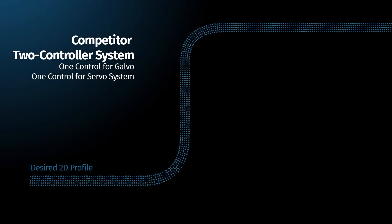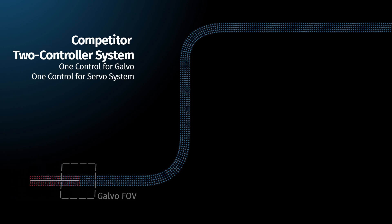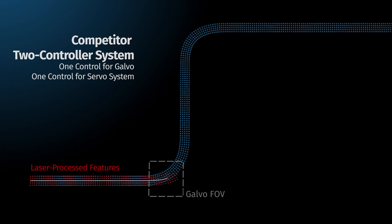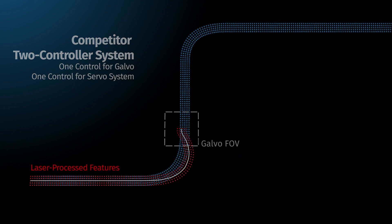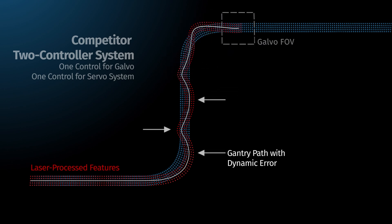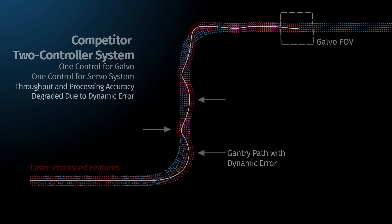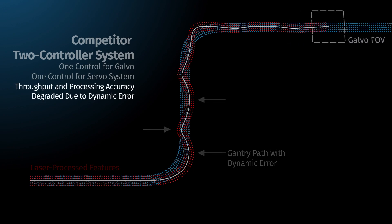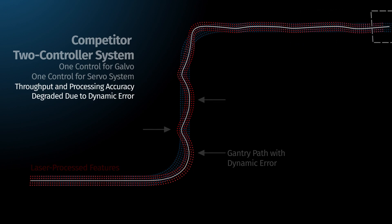Competitive IFOV solutions use two controllers — one for the galvo and one for the servo system. This makes it impossible to implement real-time correction of the dynamic errors inherent in servo systems. As a result, throughput and processing accuracy are degraded due to included servo dynamic error on the part.